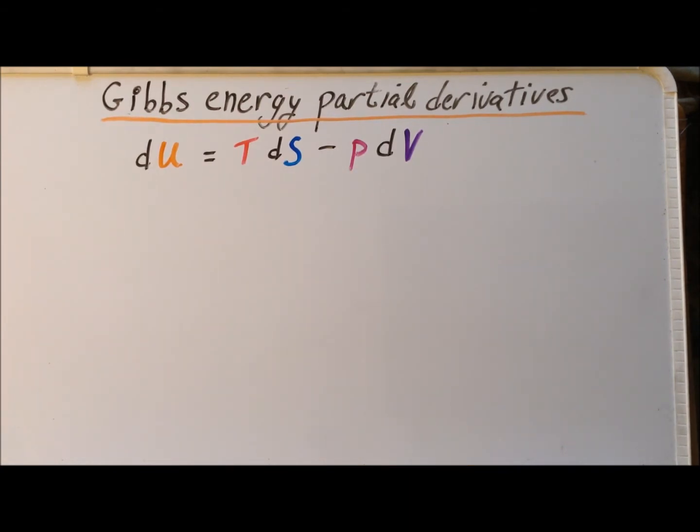This is an elaboration of the first law of thermodynamics, where U is the internal energy, T is the thermodynamic temperature, S is the entropy, P is the pressure, and V is the volume.